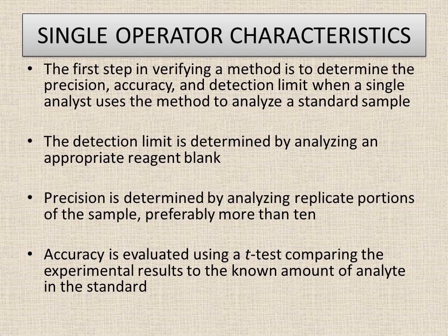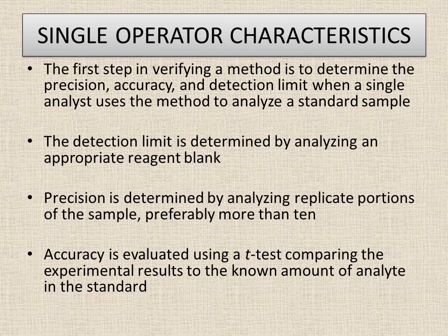Precision and accuracy are already explained in previous videos. Precision is determined by analyzing replicate portions of the sample, preferably more than 10 replicates. Accuracy is evaluated using a t-test, comparing the experimental result to the known amount of analyte in the standard — that is, comparing the results of our sample with the true value.